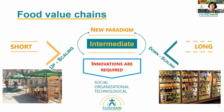Innovation in at least one of the three categories — organizational, social, or technological — is required to transition from short or long to intermediate food value chains. And because intermediate value chains have the aim to address social and environmental issues, in addition to making a profit, these sustainable business models need to be evaluated in different ways.